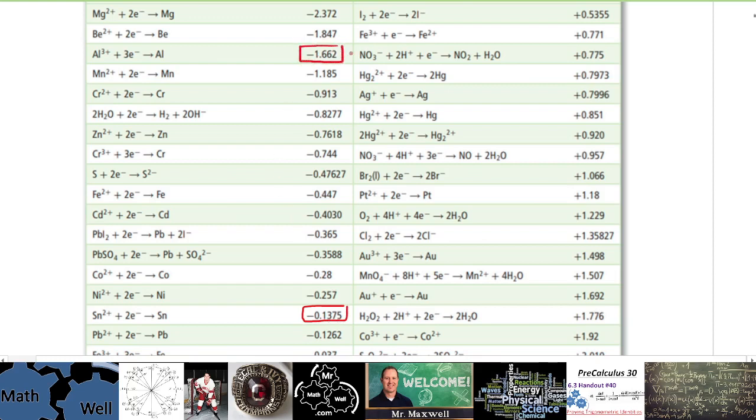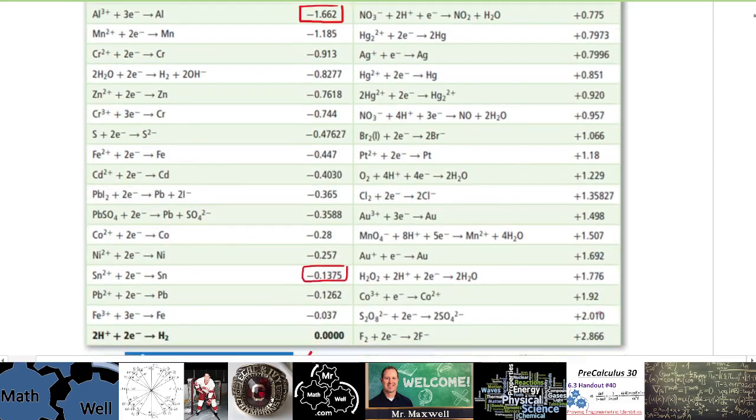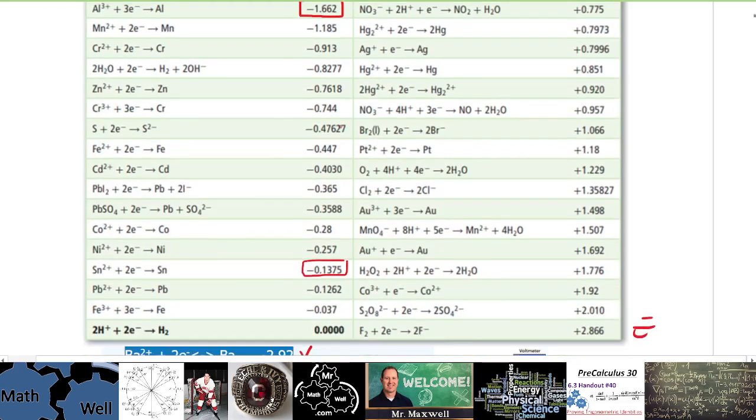Right, so again we always take the one that is highest in number minus the one that's lowest in number, or the one that's further down the list minus the one that's further up the list. So you're going to do negative 0.1375 minus negative 1.662 for that cell potential. Now because these are very close in number, you're not going to have a very large cell potential.